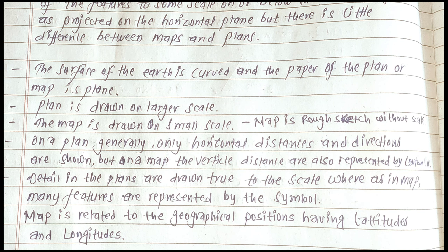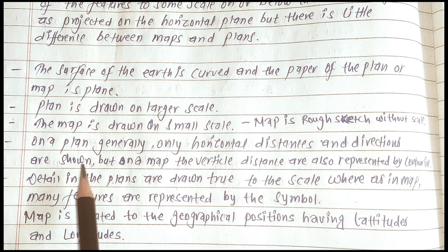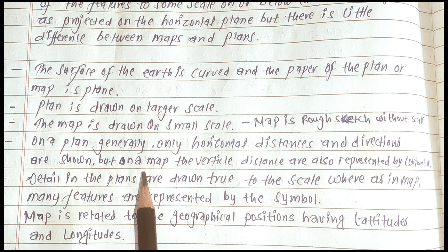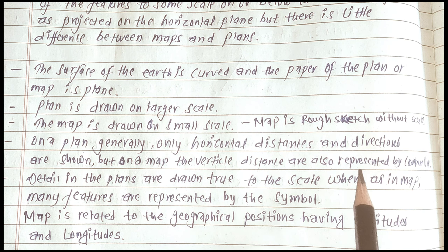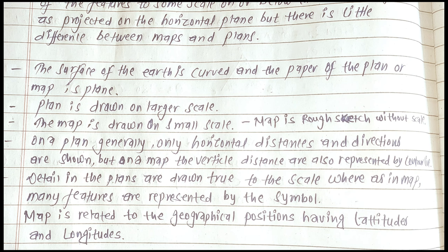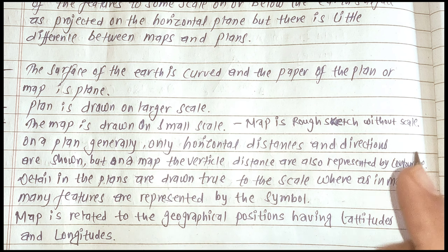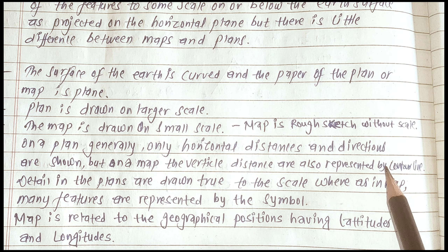The Plan shows horizontal distance and direction. The Map also shows area, and vertical distance is also represented by contour lines.